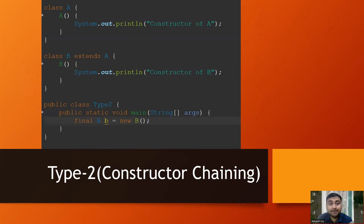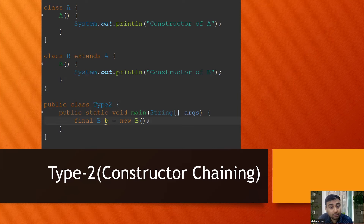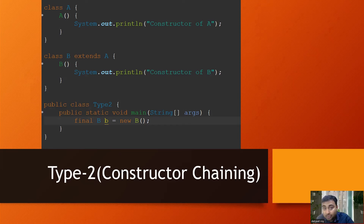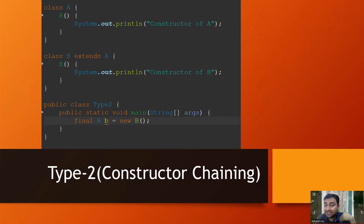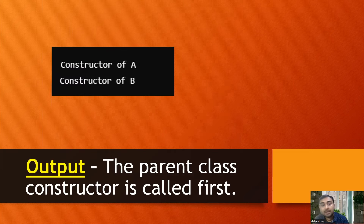Type 2 is constructor chaining. Class A has a constructor, class B extends class A and has its own constructor. When we create the object of B, it will go to the parent class A first, print 'constructor of A', then print 'constructor of B'. It flows from parent to child — top-down approach. Without parent, child can't come, so it always starts from the topmost parent.